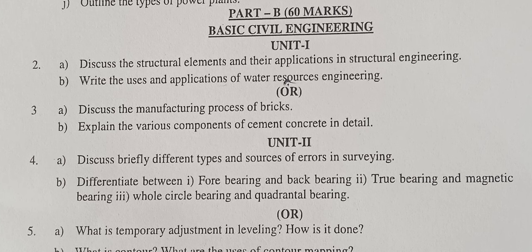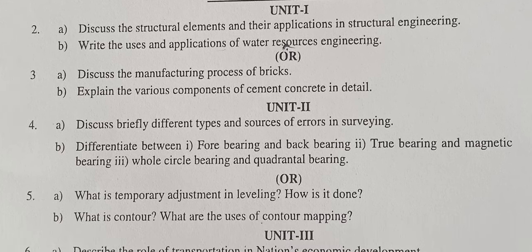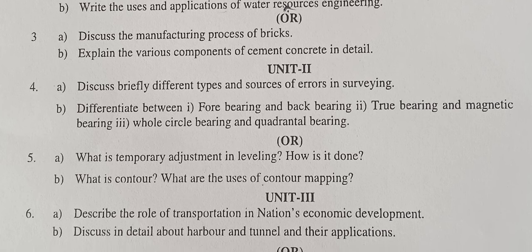Part B — Basic Civil Engineering. Discuss the structural elements and their applications in structural engineering. Write the uses and applications of water resource engineering. Discuss the manufacturing process of bricks. Explain the various components of cement concrete in detail. Discuss different types and sources of errors in surveying. Differentiate between Fore Bearing and Back Bearing, True Bearing and Magnetic Bearing, Whole Circle Bearing and Quadrant Bearing.